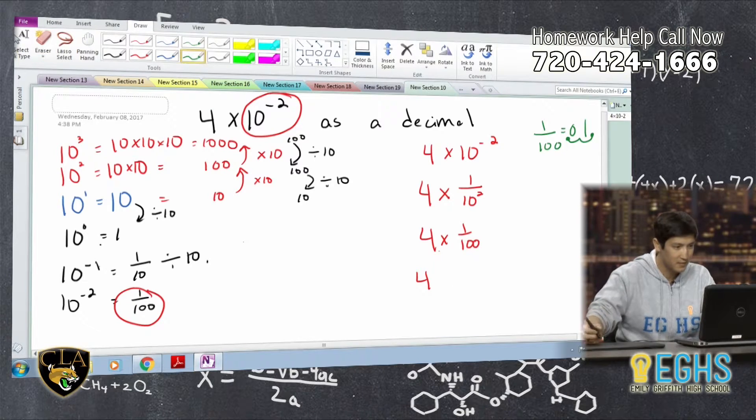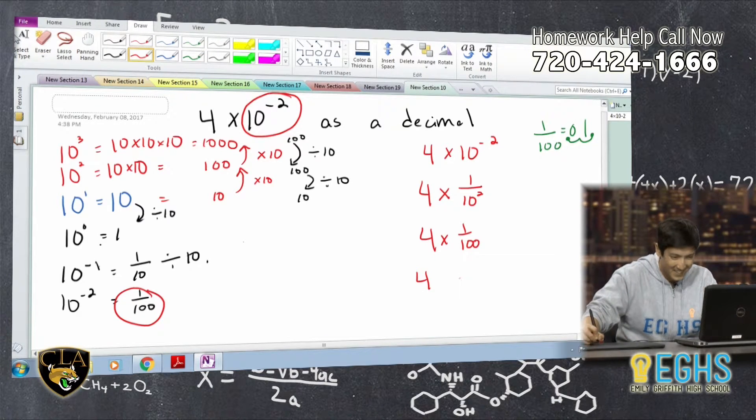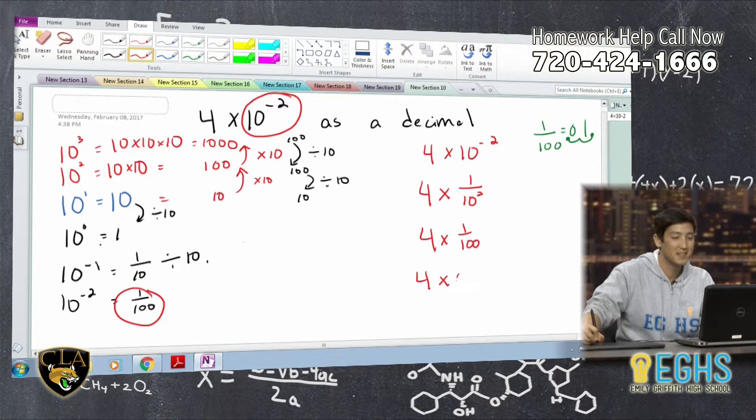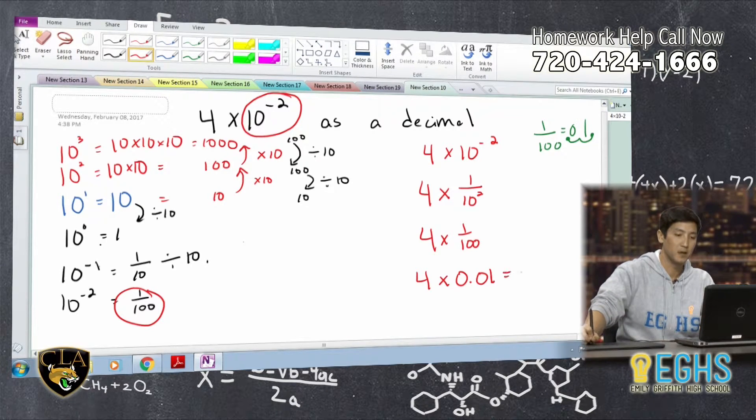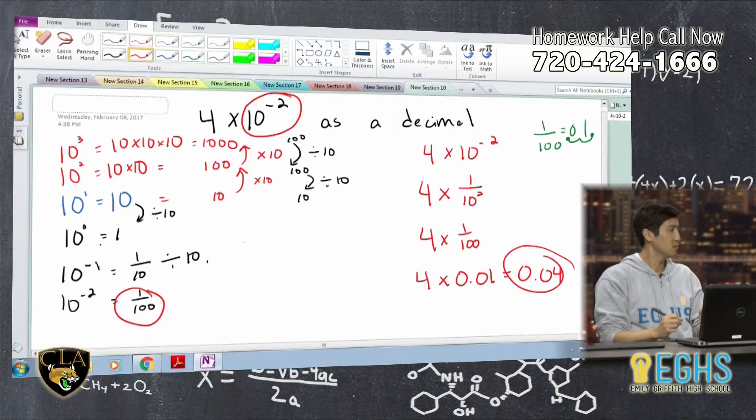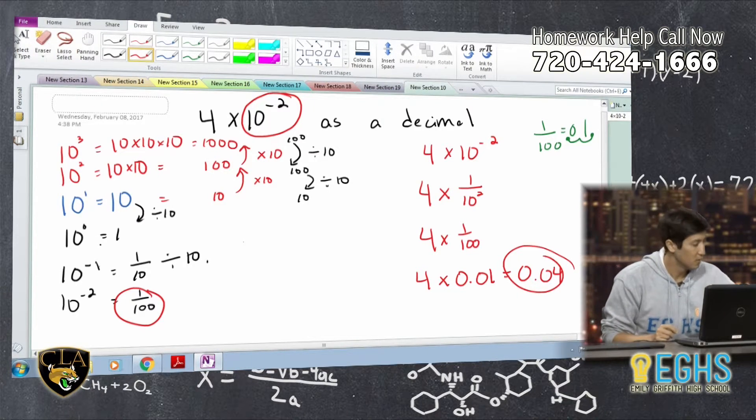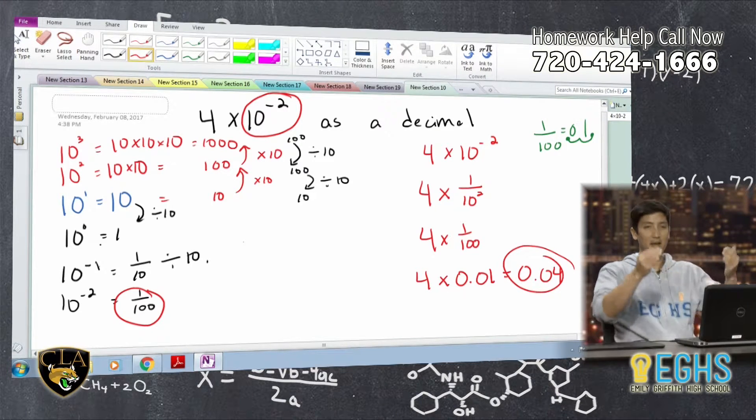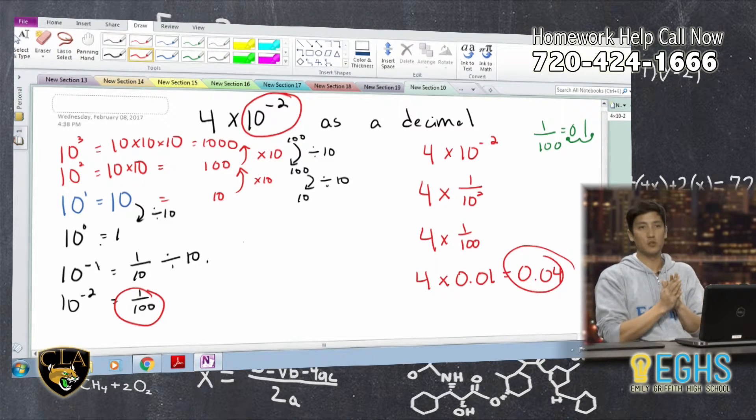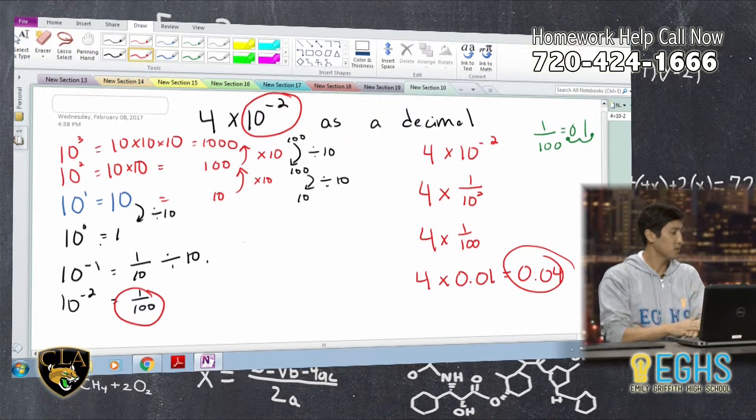So this becomes 4 equals over there. I am just off today. Falling apart. 4 times 0.01, and then that becomes 0.04 as a decimal. So you want to add something? I do. So that's, again, like seeing that pattern, understanding how to manipulate exponents will get you that decimal.